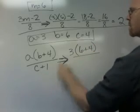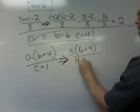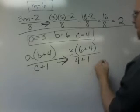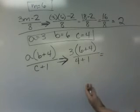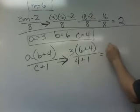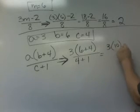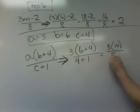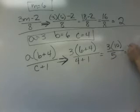And now we just simplify following the order of operations. So 6 plus 4 is 10, so this becomes 3 times 10 over 5, so that becomes 30 over 5 because that means multiply.